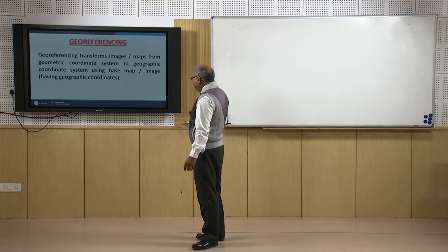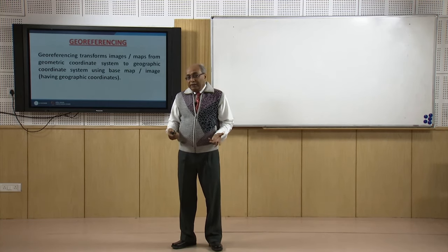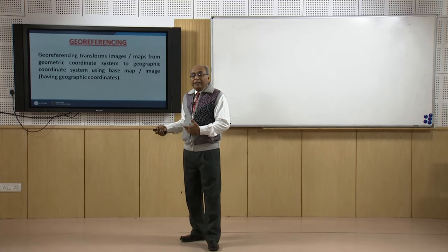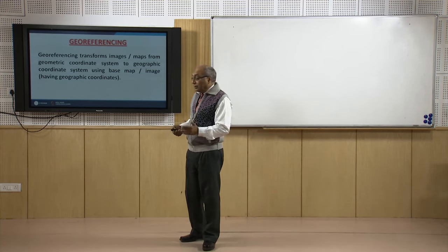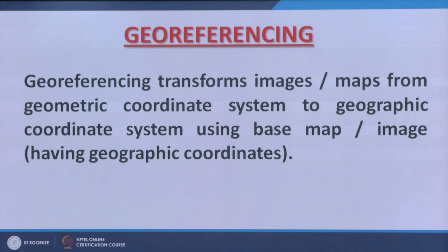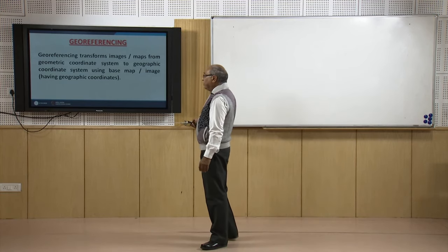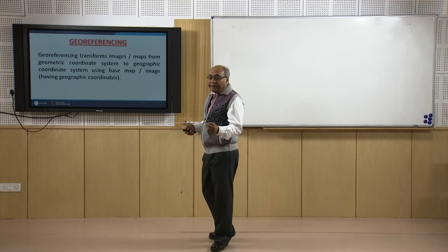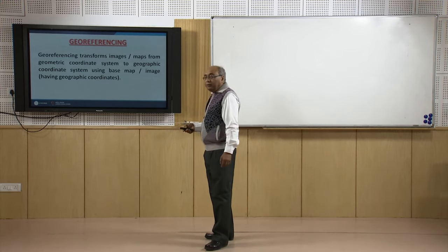On a GIS platform we handle a lot of maps. If we scan a toposheet — for example, a Survey of India topographic map at 1:50,000 scale — the resulting image will have its first pixel at the top left corner and remain in the geometric domain unless we go for georeferencing. So all scanned maps and most high-resolution satellite images are in the geometric domain, and we need to transform them to geographic domain to bring coordinates in terms of latitude and longitude. That is the basic purpose of georeferencing.